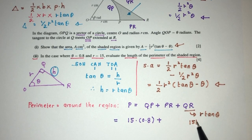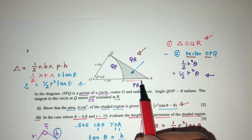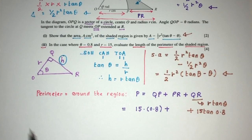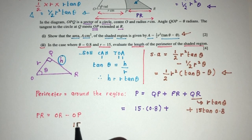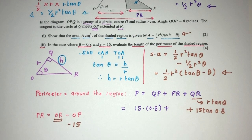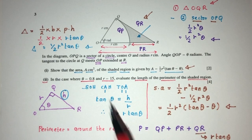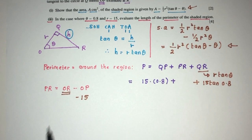To find PR, we can first find the whole length OR and then minus OP, which is the radius of 15. So PR = OR − 15. To find OR, we have the right-angled triangle with angle theta = 0.8, adjacent side OQ = 15, and we need the hypotenuse OR. We can use SOHCAHTOA or the Pythagoras theorem — it is up to you. I'll use SOHCAHTOA.